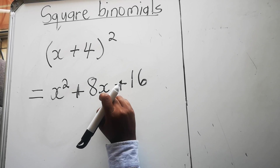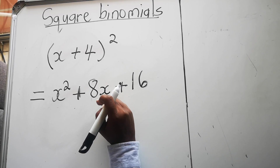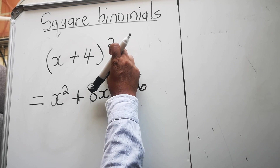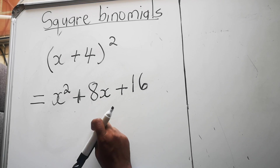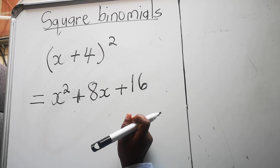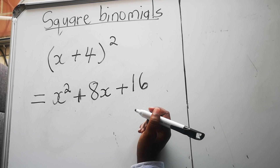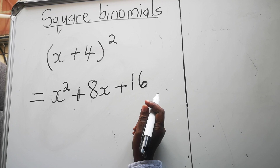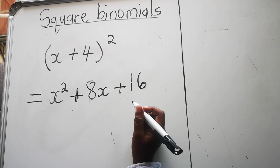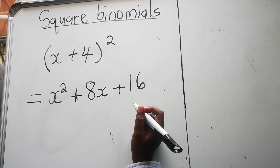This is much easier, and it's very important to learn this method because as you continue you'll find the square binomial within a problem. If you expand and multiply it fully it becomes complicated, so it's better to do it in one step — you'll have higher chances of getting your answers correct. Math is not difficult, it's not impossible, you just need to practice. Thank you for watching and please subscribe.